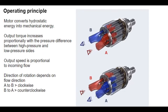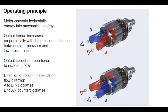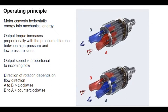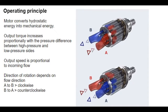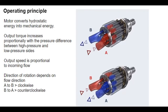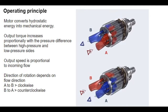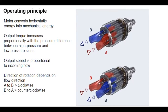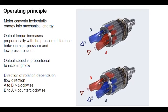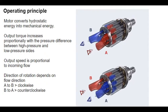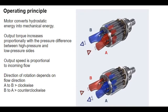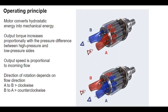Output torque increases proportionally with the pressure difference between the high-pressure and low-pressure sides. The output speed is proportional to the inward flow and inversely proportional to the displacement of the hydraulic motor. If hydraulic fluid is supplied from the A side (left), the motor rotates clockwise. If it is supplied from the B side (right), the motor rotates counterclockwise.